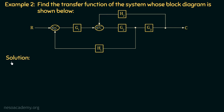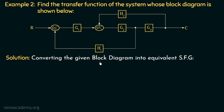Moving on to the solution, firstly we will convert this block diagram into its equivalent SFG. For that, we will first draw a forward path from the input node to the output node, and then we will draw the nodes which are present between these two nodes. If you observe this block diagram, the first node after the input node will be this summing point. Let us call this node as node A.